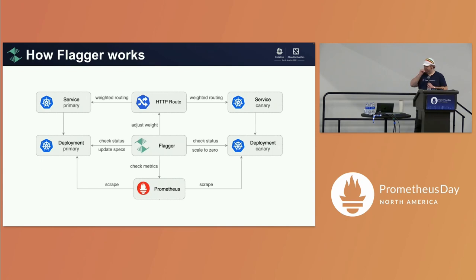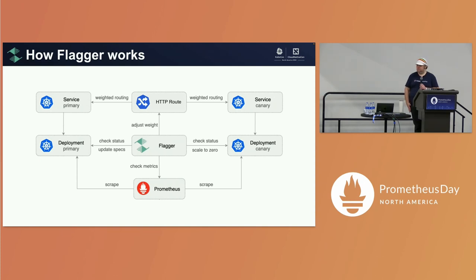What Flagger does is you give it a deployment — it creates an exact copy of that deployment, names it the primary deployment. The primary deployment is the stable one that you want your users to hit all the time. Then you have the canary deployment where you're running all sorts of experiments.